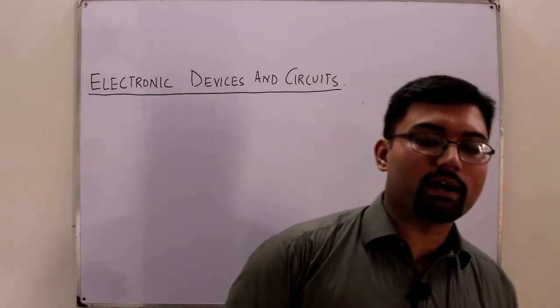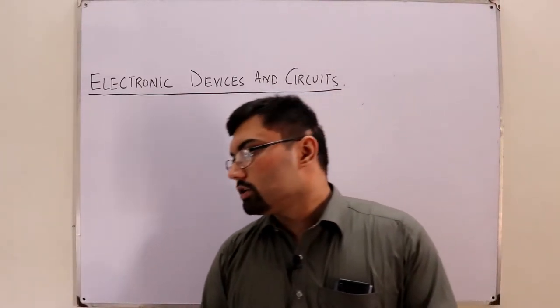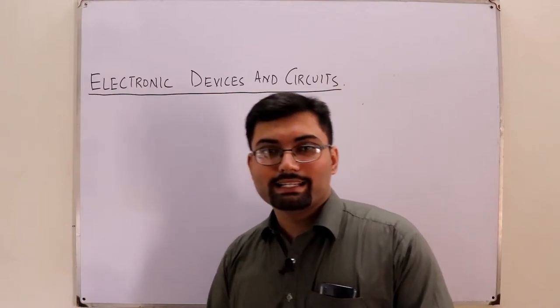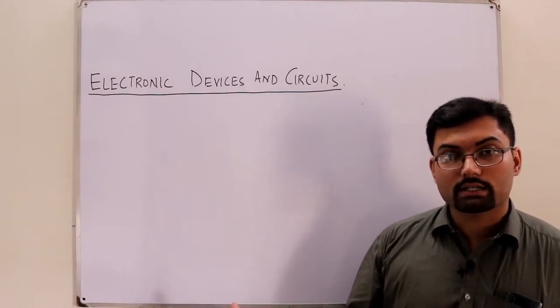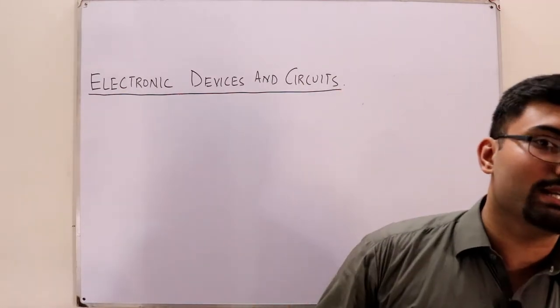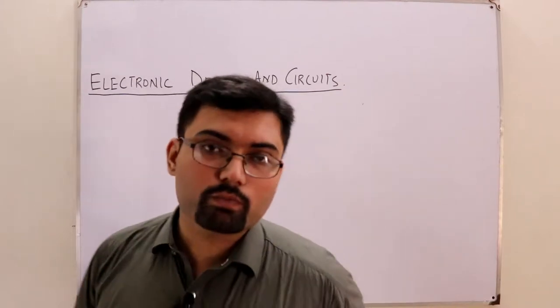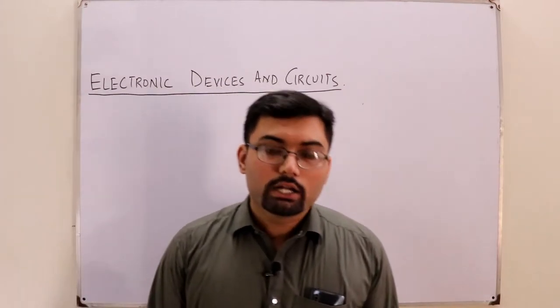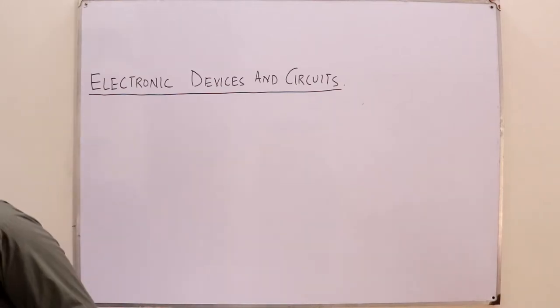The new course is electronic devices and circuits from the analog electronics side. This course has to be divided into two portions: one is this that we are starting today, electronic devices and circuits, and the next would be electronic circuits part two. This is basically part one of the course.